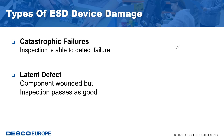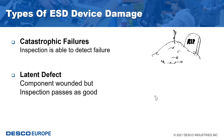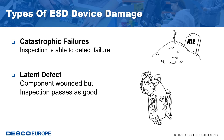Catastrophic failures occur when a component is damaged to the point where it is dead and will never again function. This is the easiest type of ESD damage to find, since it can be detected during testing.